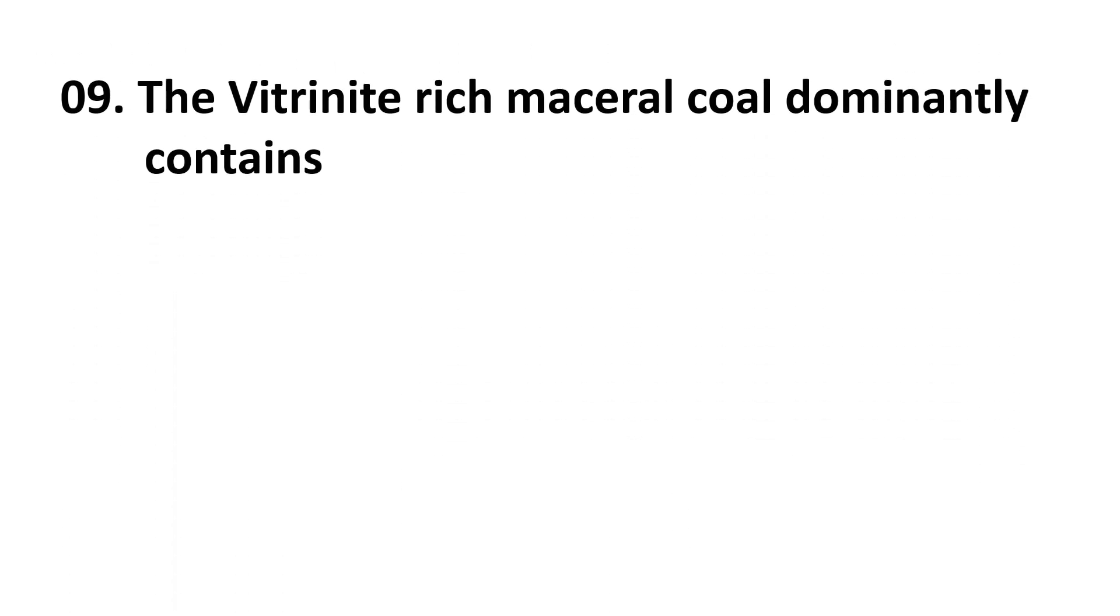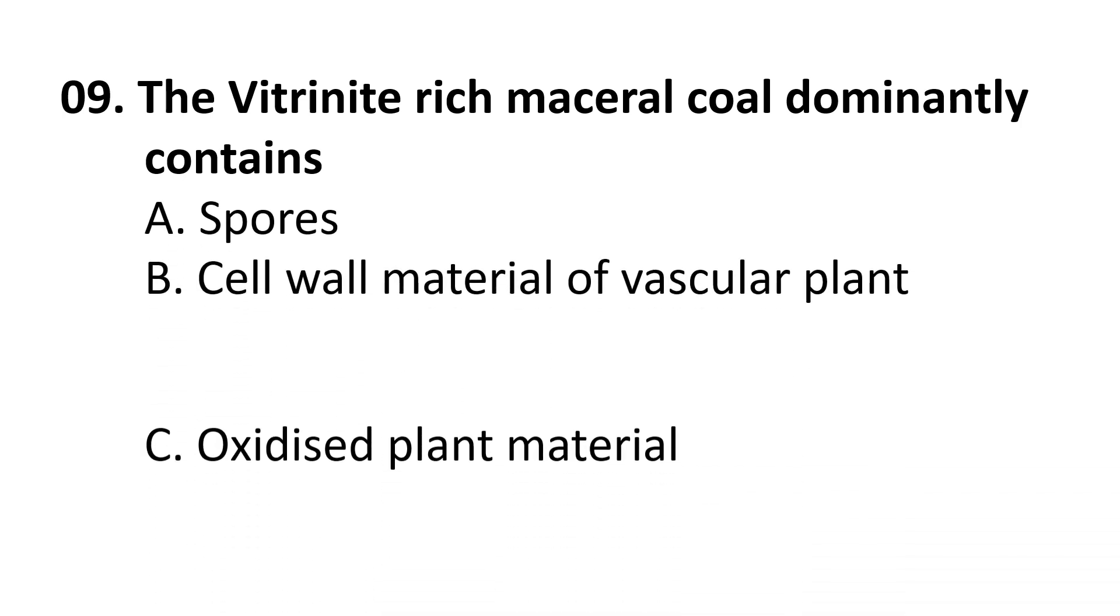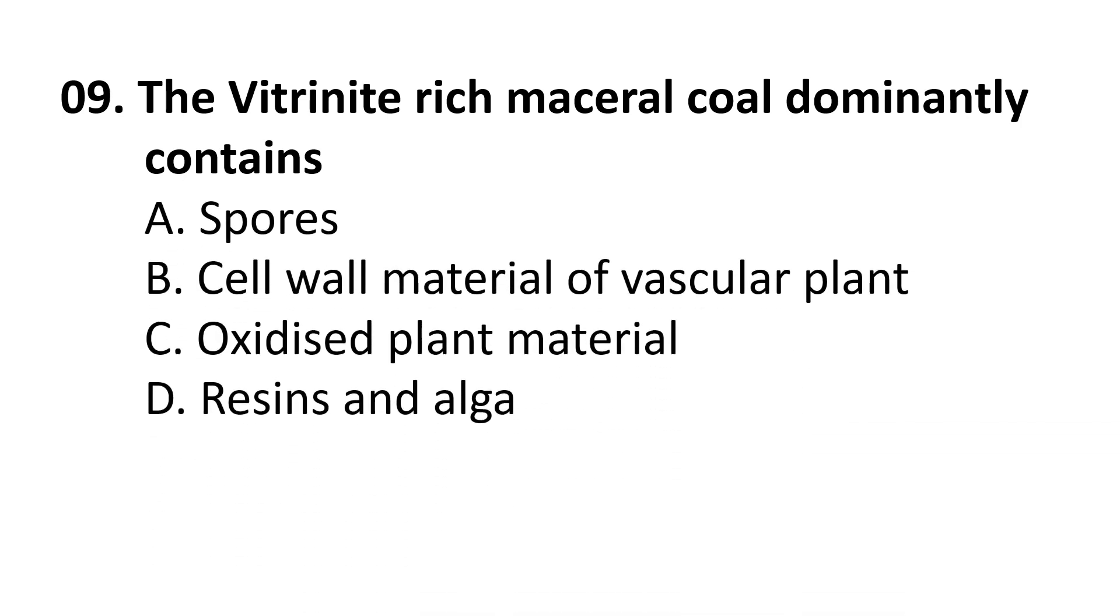The ninth question: the vitrinite rich maceral coal dominantly contains. Choices are A Spores, B Cell wall material of vascular plant, C Oxidized plant material, D Resins and algae. The correct answer is B, cell wall material of vascular plant.